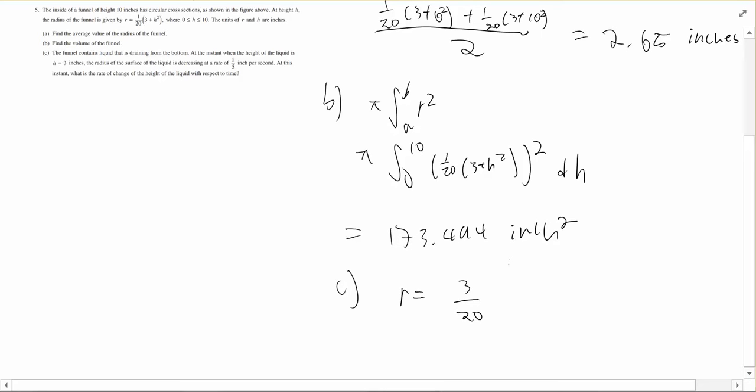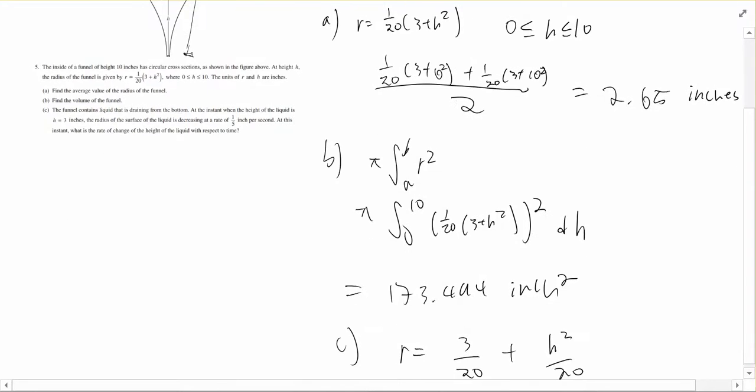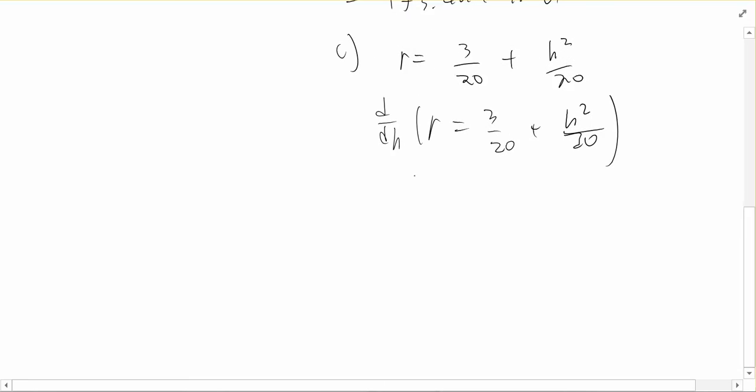The equation can be broken down to 3 over 20 plus h squared over 20, and that's basically the same thing as what we have for the given. If we do d dh, basically if we just take the derivative of the whole equation, we get something like dr equals... this thing becomes 0 if you take the derivative. So the only thing that's left is h over 10 times dh.